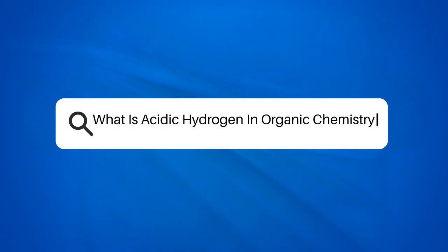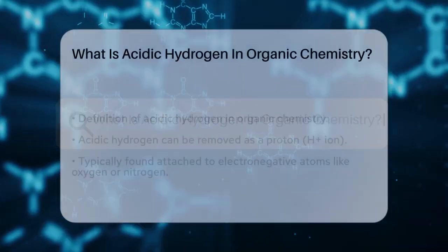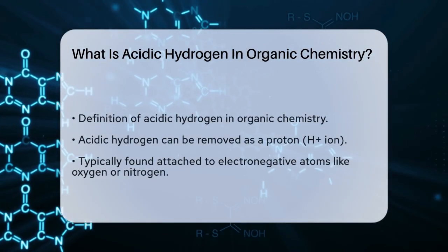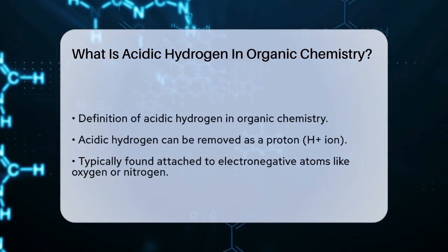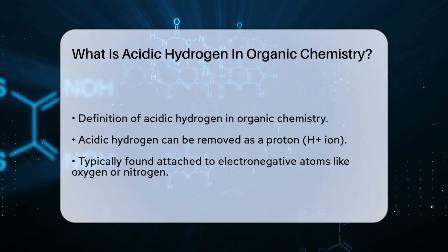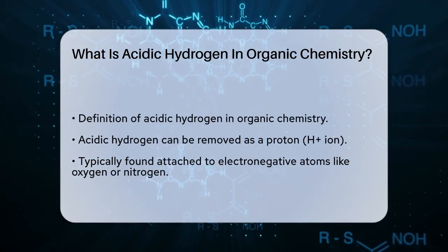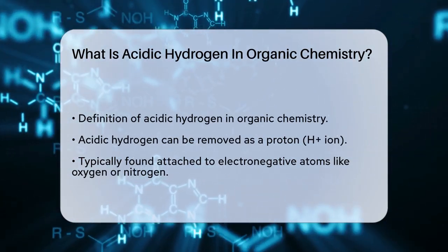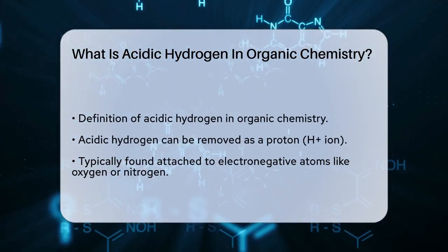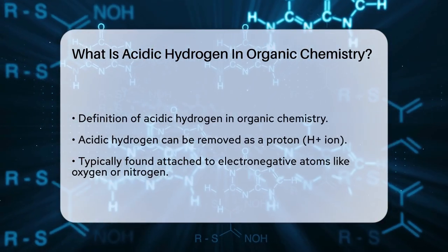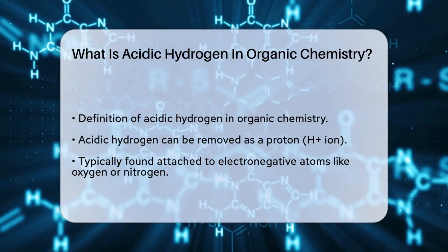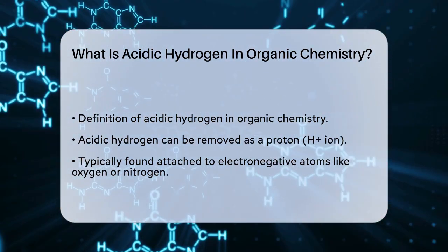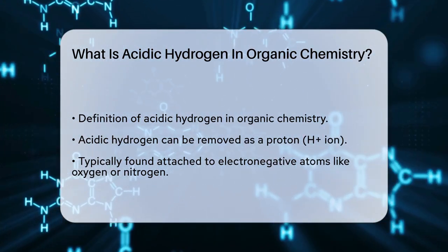What is acidic hydrogen in organic chemistry? If you're curious about what makes a hydrogen atom in a molecule act like an acid, you're in the right place. Let's break it down step by step. In organic chemistry, an acidic hydrogen is a hydrogen atom that can easily be removed from a molecule as a proton, or H+ ion.